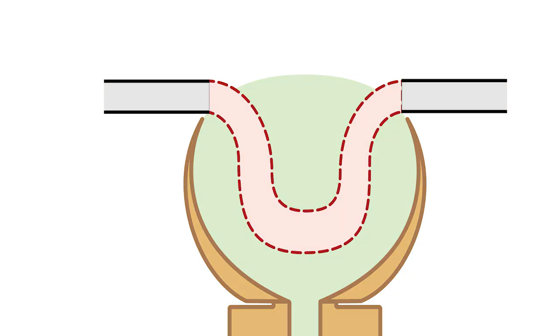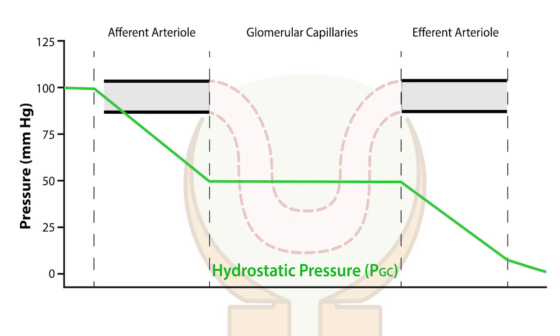So, how does the myogenic reflex work in the glomerulus? Well, let's explain using this familiar illustration of the glomerulus and hydrostatic pressure profile across the afferent arterial, glomerular capillaries, and efferent arterial.